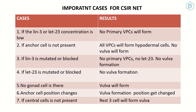The main requirement is the anchor cell — it must be present. Case 6: if the anchor cell position changes, the vulva formation position changes, but it will still form. If the central cell p6p is absent, the remaining cells will still form vulva as long as the anchor cell is present. The most important requirements are: the anchor cell present, LIN-3 concentration adequate, and the LET-23 receptor present.